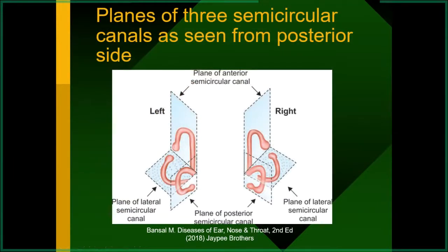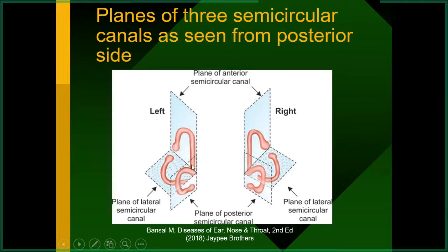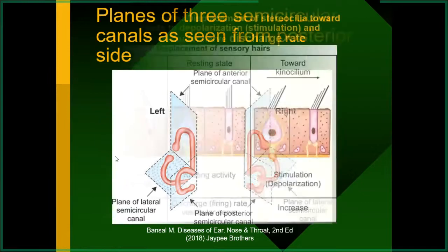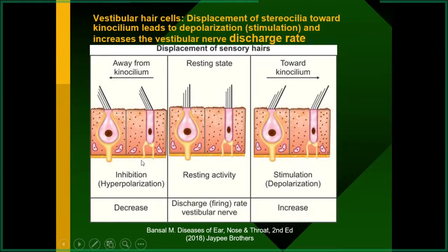The lateral semicircular canal senses horizontal rotating movements, while the vertical canals sense to-and-fro and side-to-side movements. They are situated at 90-degree angles to each other in an orthogonal position. Vestibular hair cells are continuously firing action potentials. Movement away from the kinocilium is inhibitory, while movement toward the kinocilium is excitatory.